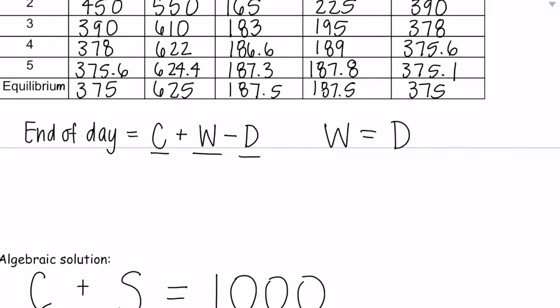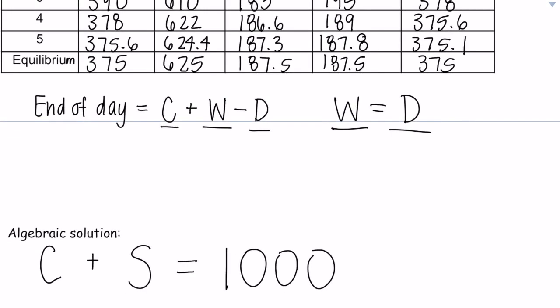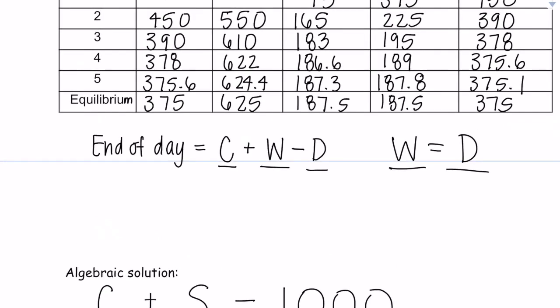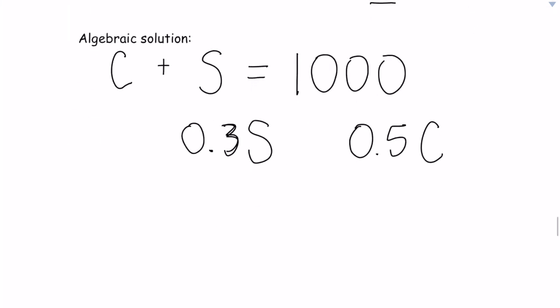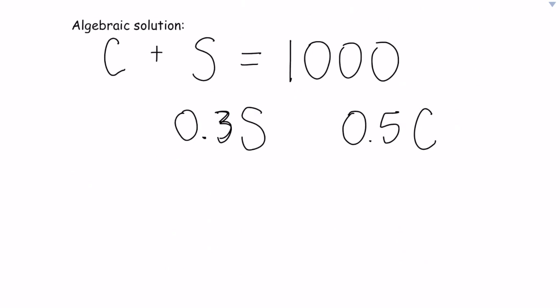When our rates are the same, weddings equals divorces, that means that if we subtract our weddings from divorces, that should equal 0. So 187.5 minus 187.5 is 0. That's when we get to equilibrium. At equilibrium, the amount of weddings minus the amount of divorces should always equal 0. That's true for any equilibrium. The rate forward and the rate back is the same. So if we do the amount of weddings, which is 0.3S, minus the amount of couples getting married or divorced, which is 0.5C, that will equal 0.